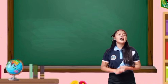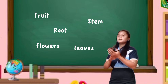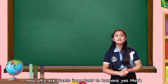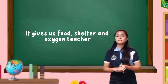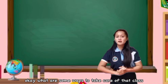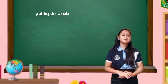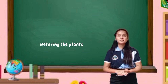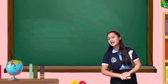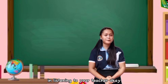Again, class — what are the five parts of plants? The roots, stem, leaves, fruit, and flower, teacher. Very good, class! You got it right. Now, why are plants important to humans? Yes, Mark. They give us food, shelter, and oxygen. Very good! Let's give Mark a round of applause. What are some ways to take care of plants? Antoinette — pulling the weeds. Giselle — pulling out weeds. Anna — fertilizer. Edward — very good. Antoinette — very good. You really did a great job listening to your teacher.